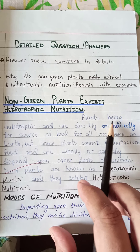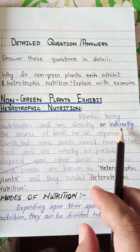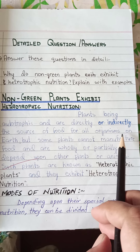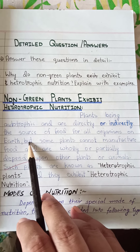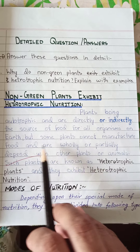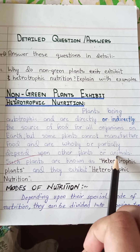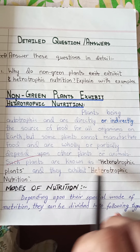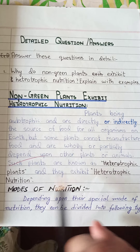Plants being autotrophic are directly or indirectly the source of food for all the organisms on earth. But some plants cannot manufacture food and are wholly or partially dependent upon other plants or animals. Such plants are known as heterotrophic plants and they exhibit heterotrophic nutrition.